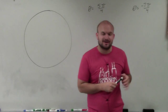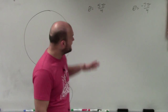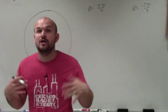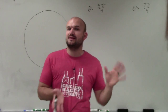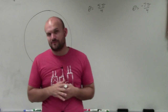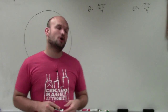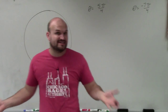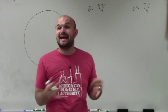Welcome ladies and gentlemen. What I'd like to do is show you how to evaluate our six trigonometric functions for angles — 5 pi over 4 and negative 7 pi over 4 — using the unit circle. We're going to find these angles, determine where they intersect the unit circle, and use that point to evaluate sine, cosine, tangent, cosecant, secant, and cotangent.